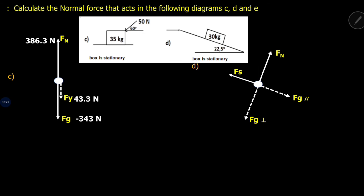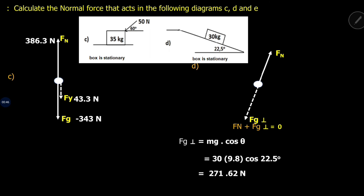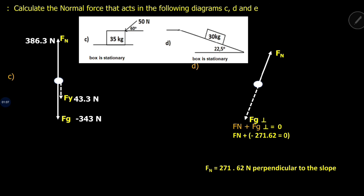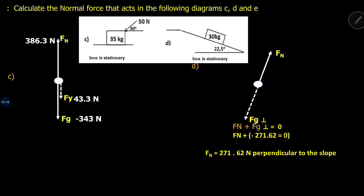We ignore the static friction and weight parallel, and we're left with two forces. We imagine this is a tilted y-axis — positive direction upward from the surface, negative direction into it. Fn plus Fg perpendicular equals zero. Fg perpendicular is calculated as Mg cos theta, giving 271.60 Newtons. So Fn equals 271.62 Newtons, perpendicular to the slope.